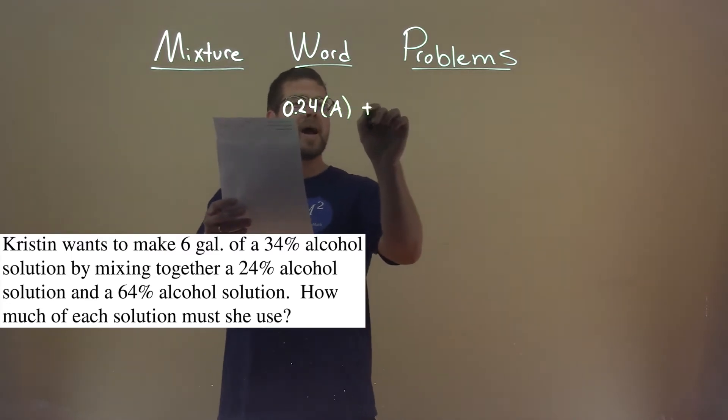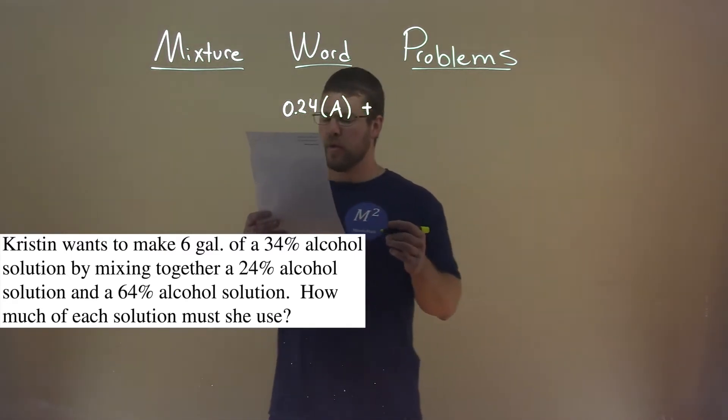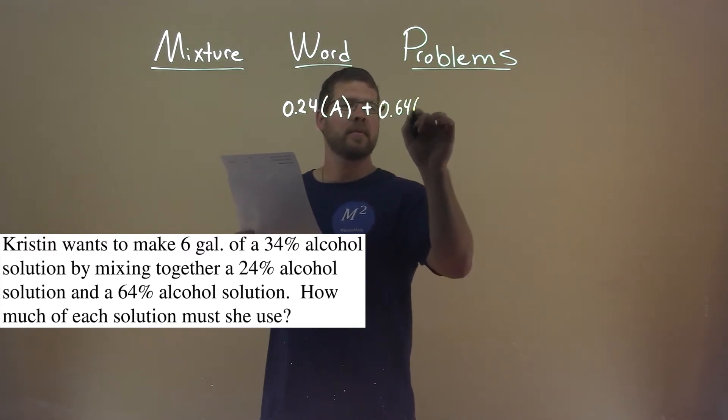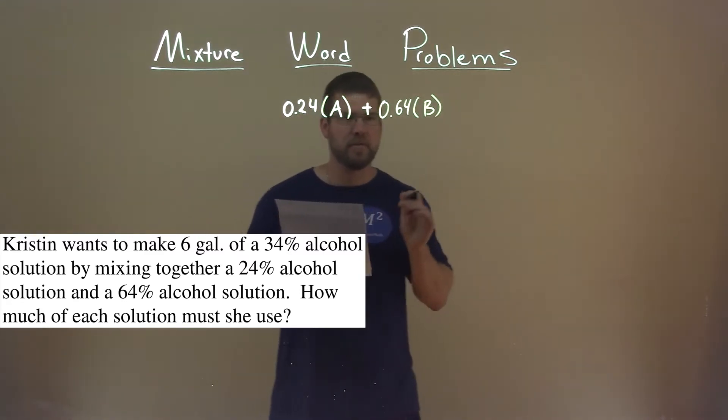We're combining that, or Kristen's combining that here, with a 64% alcohol solution, so 0.64. And the amount we don't know is called solution B, and that's going to be that amount of solution B.